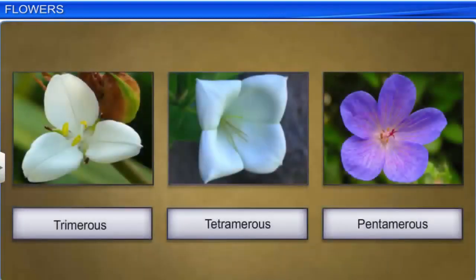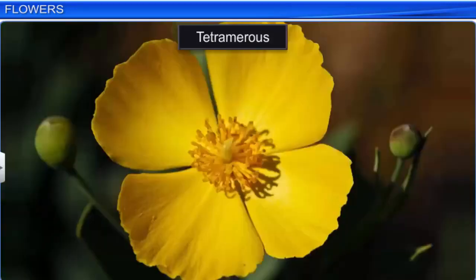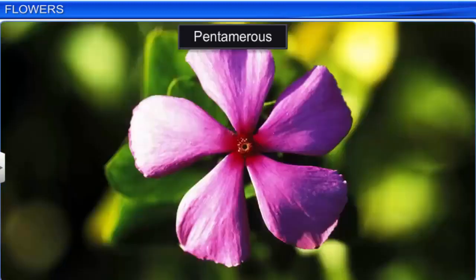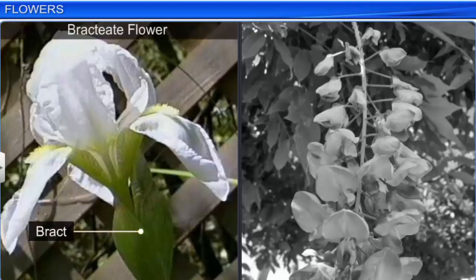Flowers are also classified as trimerous, tetramerous, or pentamerous based on the number of floral parts like sepals, petals, and stamens. Trimerous flowers have floral parts in sets of three, tetramerous in sets of four, and pentamerous in sets of five. Some flowers have reduced leaves at the base of the thalamus known as bracts and are called bracteate; flowers where bracts are absent are called ebracteate.